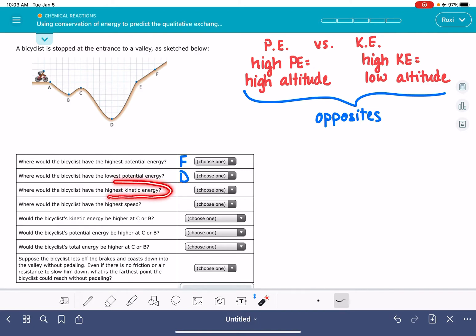Where would the bicyclist have the highest kinetic energy? Here's where I want you to remember that these are opposites of each other, potential and kinetic energy. So high kinetic energy is low potential energy. That is going to be point D. And where would the bicyclist have the highest speed? This just means when is the bicyclist going the fastest?